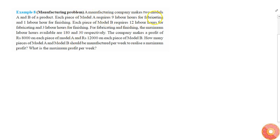The question says a manufacturing company makes two models A and B of a product. Each piece of Model A requires 9 labor hours for fabricating and 1 hour for finishing. Model B requires 12 hours for fabricating and 3 hours for finishing.